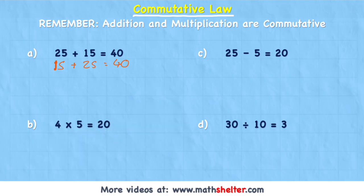And I can prove that with written method because 4 times 5 is 20. But if I flip the numbers around, 5 times 4 equals 20 as well. So multiplication is also commutative.